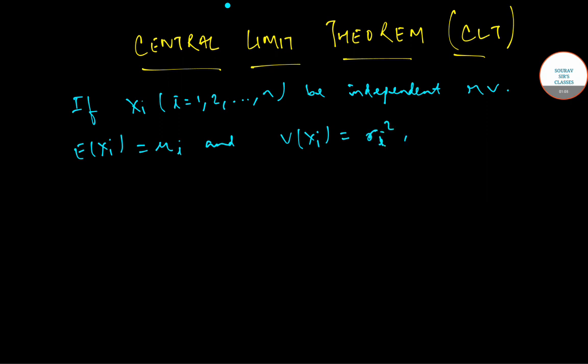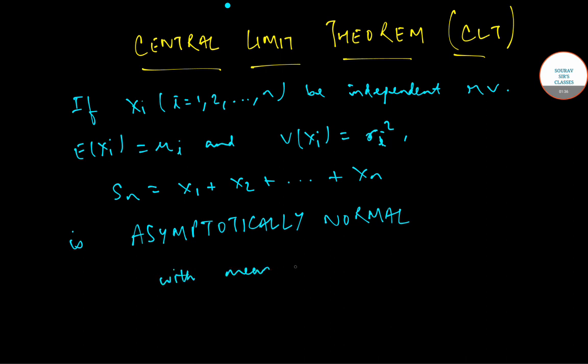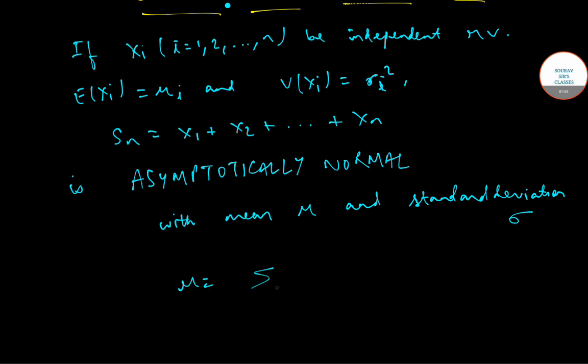then under certain very general conditions, the random variable Sn equals x1 plus x2 and so on up to xn is asymptotically normal with mean mu and standard deviation sigma, where mu equals summation mui, i going from 1 to n, and sigma square equals summation sigma i square where i goes from 1 to n.